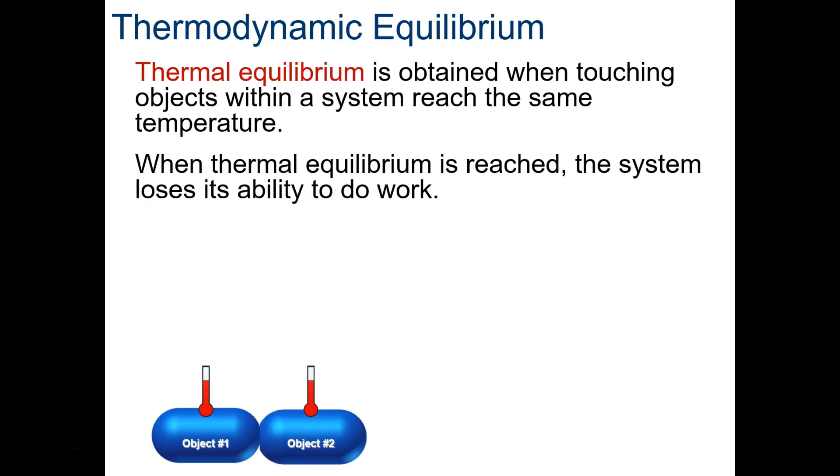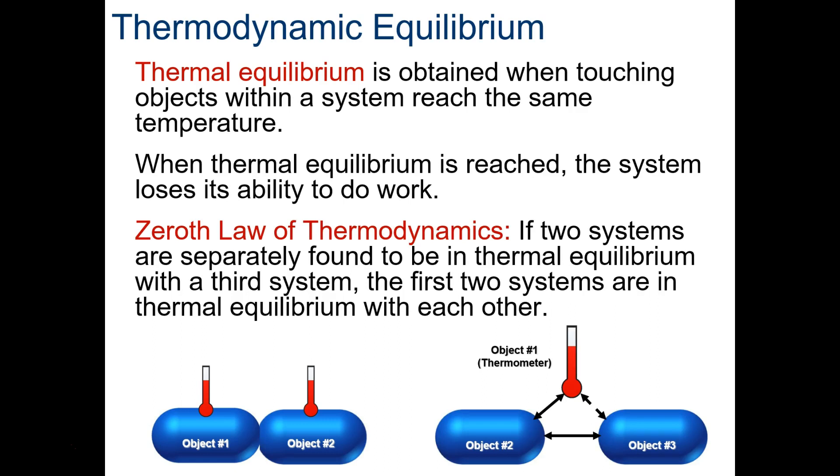Thermal equilibrium is obtained when touching objects within the system reach the same temperature. When thermal equilibrium is reached, the system loses the ability to do work. Thermal energy is the mover here. If they're in equilibrium, there's no more push anymore, there's no force. So you lose the ability to do work. Zeroth law of thermodynamics: If two systems are separately found to be in thermal equilibrium with the third system, the first two systems are in thermal equilibrium with each other. So you want to write these two down, thermal equilibrium and Zeroth law.